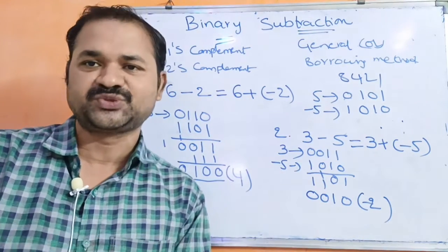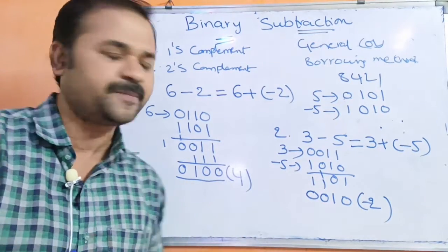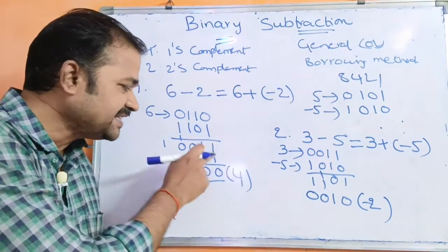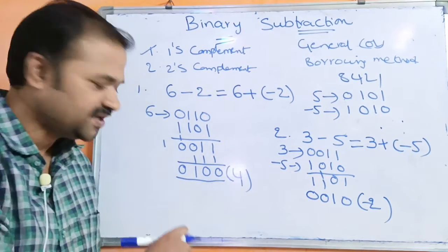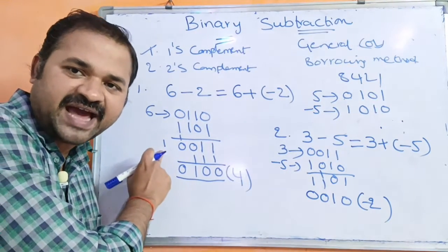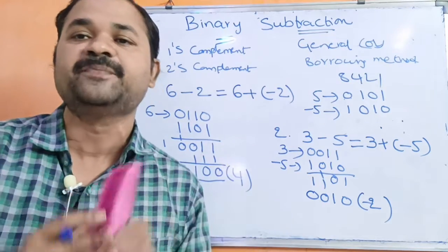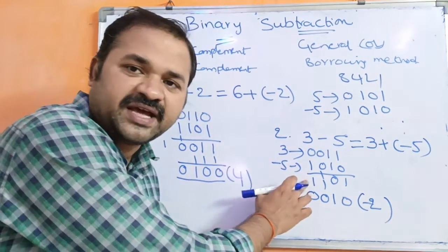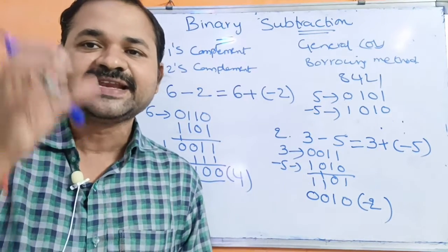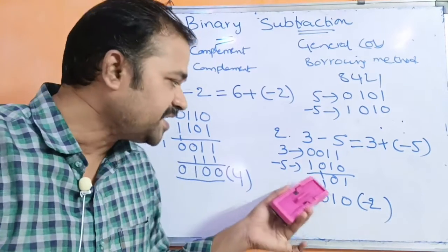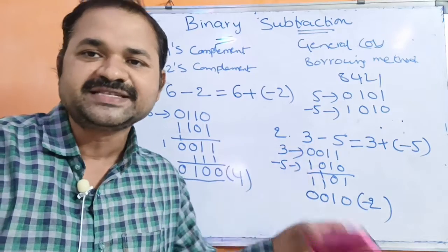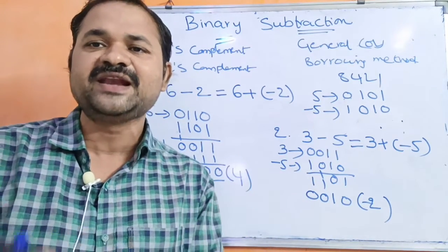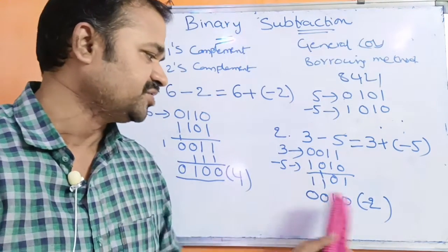So the result of 3 minus 5 is minus 2. Here are the two steps. Step one: after performing the addition, if the carry is 1, that carry is added to the least significant bit of the result, and it specifies the result is a positive number — 0, 1, 0, 0 means 4. Step two: if we don't get any carry, then the result is a negative number and is in one's complement form. To get the decimal, calculate the one's complement: 0, 0, 1, 0 — that is minus 2.